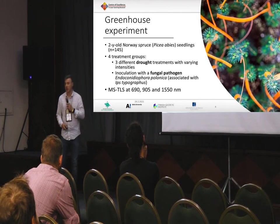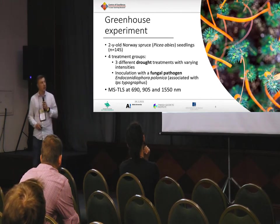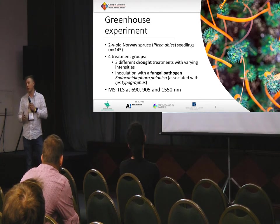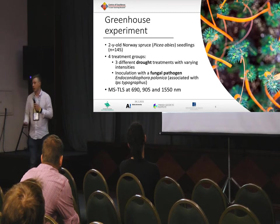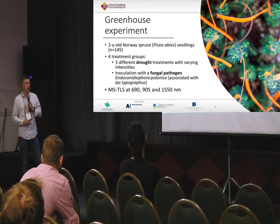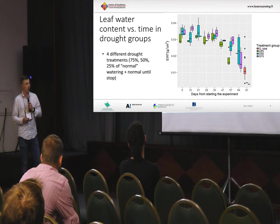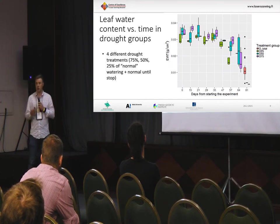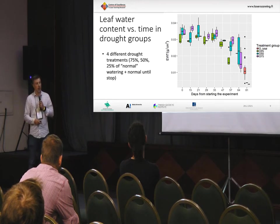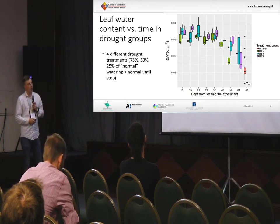We got a test with live seedlings — almost one out of 50 Norway spruce seedlings that were divided into different groups. We had different drought treatments varying in intensity, and then we were inoculating some of the seedlings with a pathogen that is associated with European spruce bark beetle. We had three different wavelengths, and we did destructive sampling, so each seedling after it was scanned was sampled and destroyed.